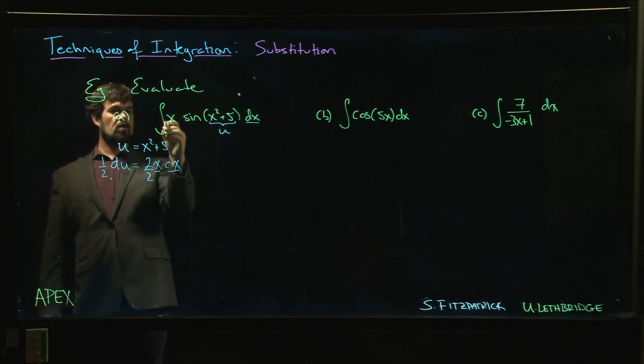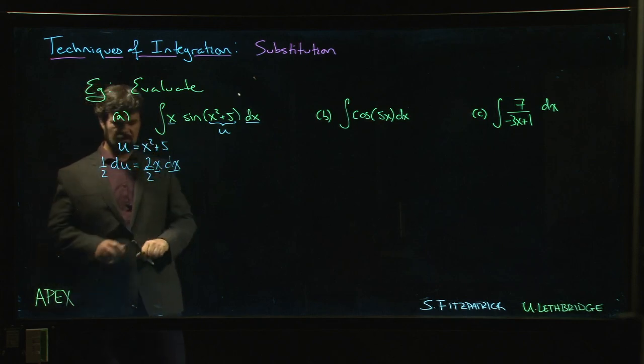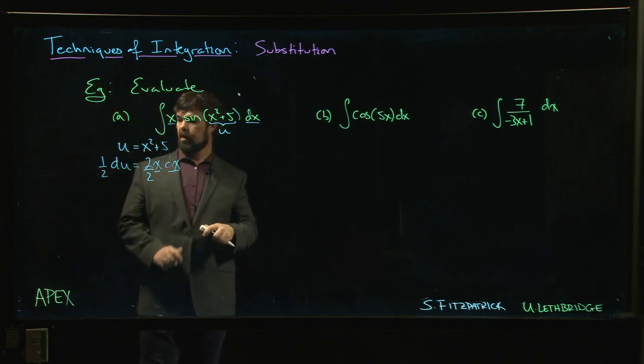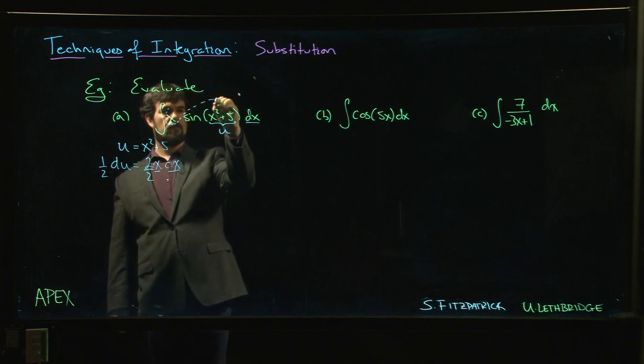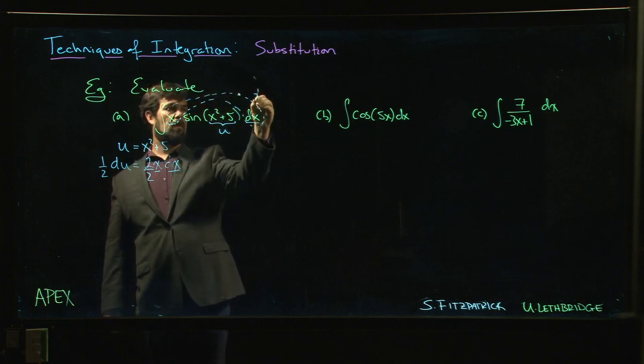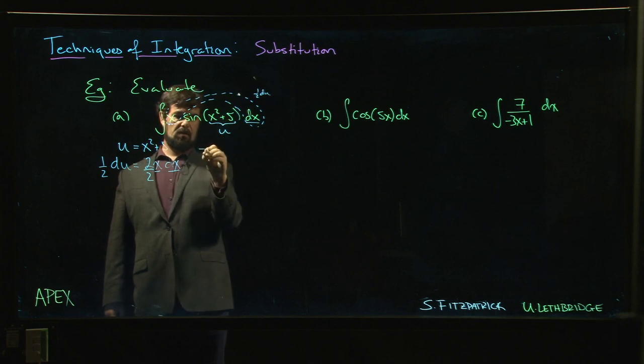If you like, you could put a two here and put a one-half out front, but we'll do it this way. This is typically how people like to operate. So then we say okay, this x times dx, that gets grouped together. That's going to be one-half du. This is just going to be sine of u.